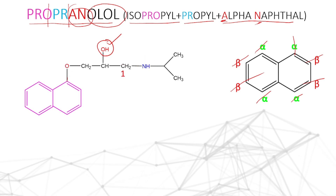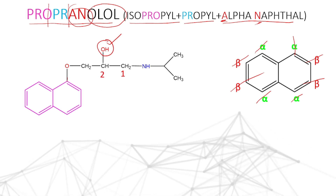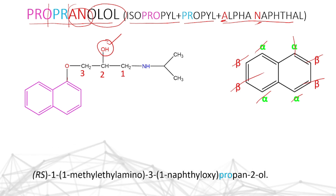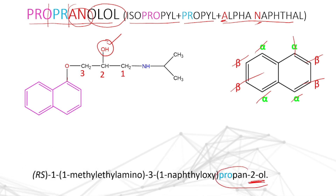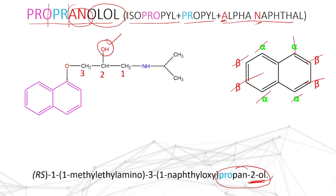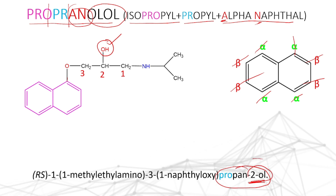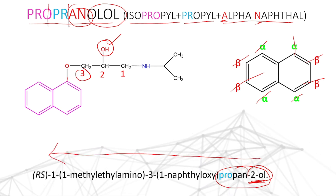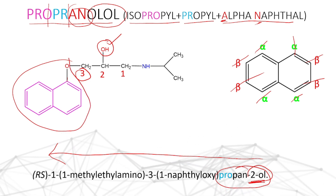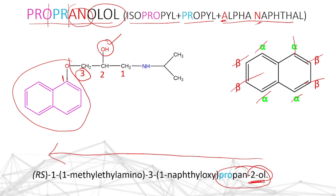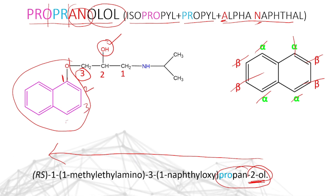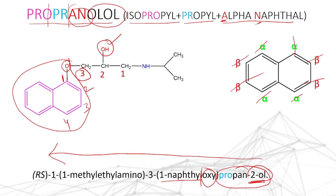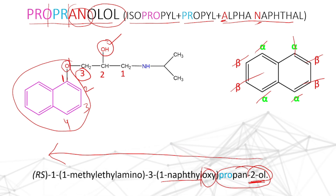Then numbering — we need to give numbering to the alcohol group containing carbons, that is one, two, and three. The IUPAC name starts with the alcohol group identified at the second position of propane — propan-2-ol. Always in IUPAC name, we need to write from the back side to the front side. At the third position, it contains alpha-naphthoxy — one naphthyloxy group is there. This is the oxygen group, so at the three position, one naphthyloxy group is there.